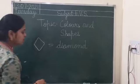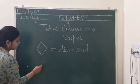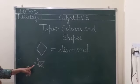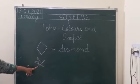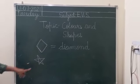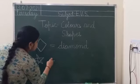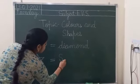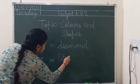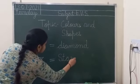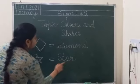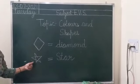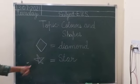The next shape is — you all know which shape is this? Star shape. Which shape is this? Star shape. Star. The spelling is S-T-A-R. Star shape.